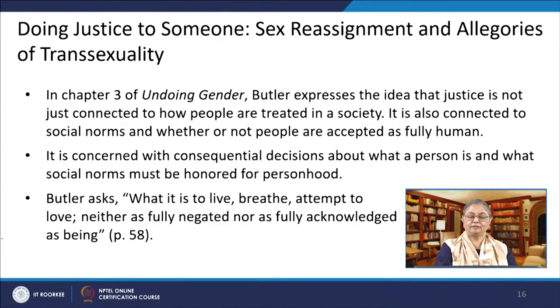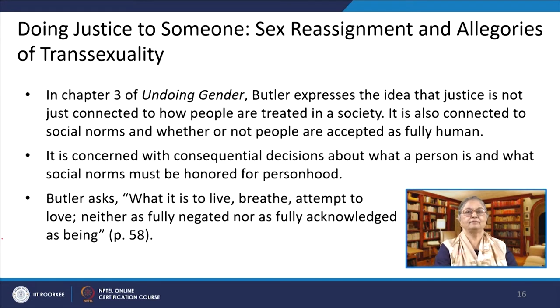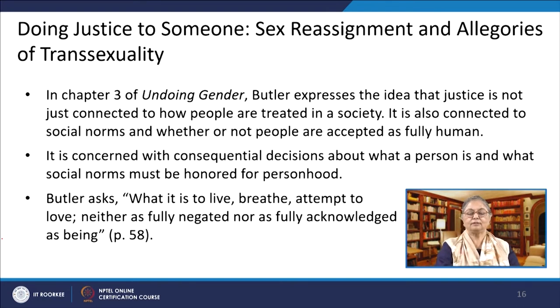In chapter 3 of Undoing Gender, Butler expresses the idea that justice is not just connected to how people are treated in society. It is also connected to social norms and whether or not people are accepted fully as human beings. It is concerned with consequential decisions about what a person is and what social norms must be honoured for personhood. Butler asks what it is to live, breathe, attempt to love — neither as fully negated nor as fully acknowledged as being. This relationship between intelligibility and being human carries a certain theoretical urgency. The criterion by which we judge a person as a gendered being justly or unjustly governs the recognizability of the human.